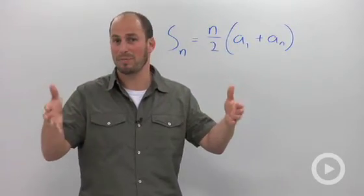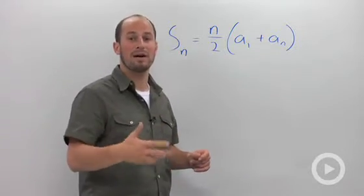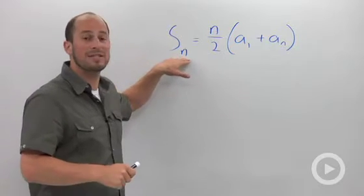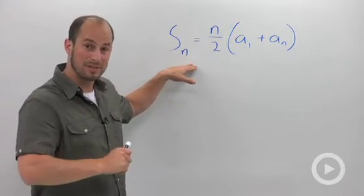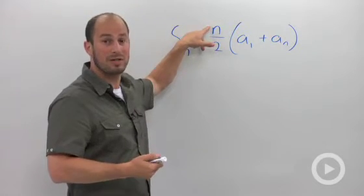So we're just adding up some of the terms in the sequence. And we actually have a formula for the sum of an arithmetic sequence. How it works is S of n, so this is the sum of the first n terms in this series, is equal to n over 2, so that's the number of terms.